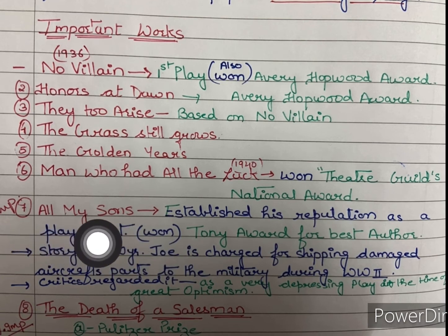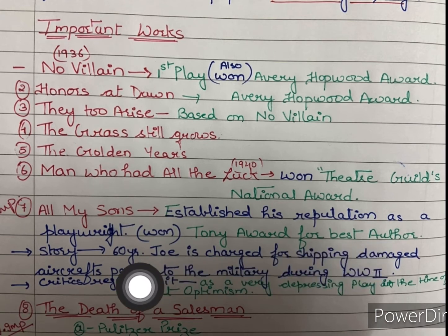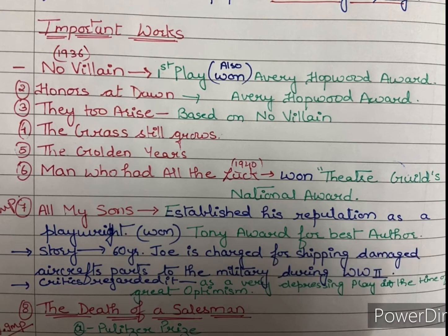Seventh is All My Sons — this is a very important play, isse aap details se study kijiye. This play established his reputation as a playwright, and for this play he won the Tony Award for Best Author. The story revolves around a 60-year-old man, Joe, who is charged for shipping damaged aircraft parts to the military during World War II. Critics regarded it as a very depressing play in times of great optimism, but even then he got the Tony Award for Best Author.